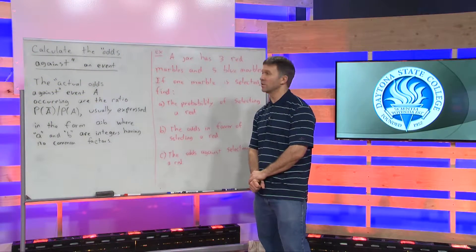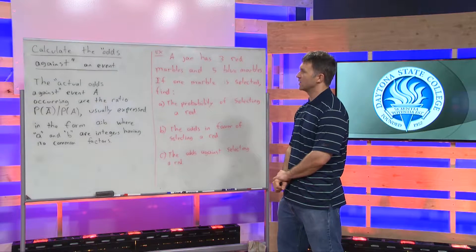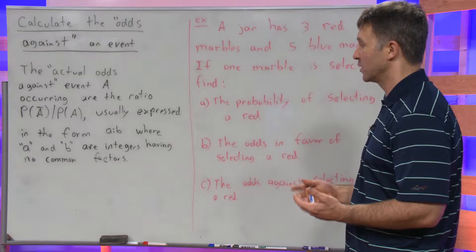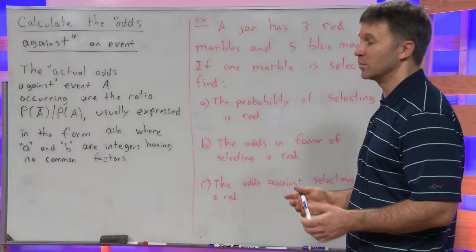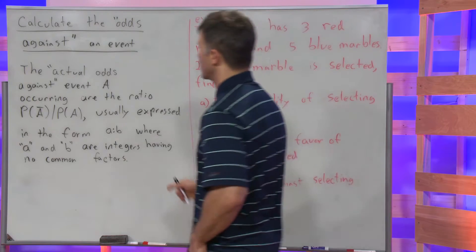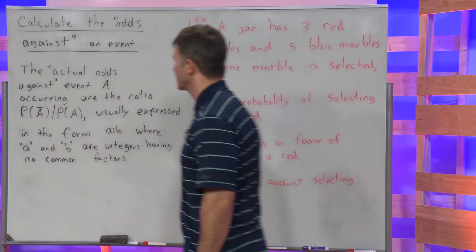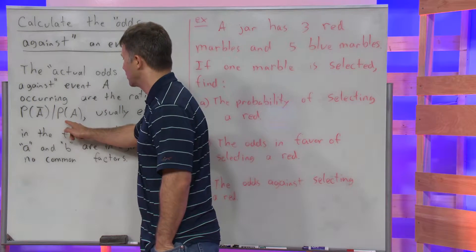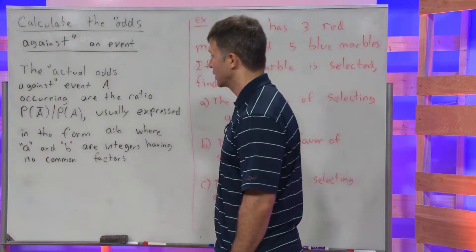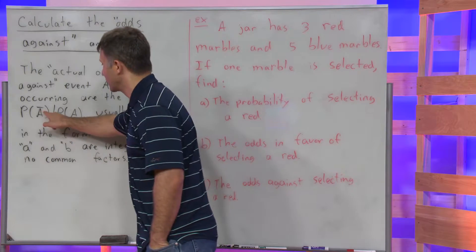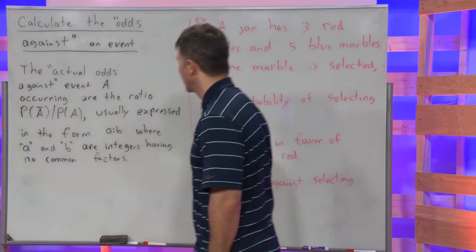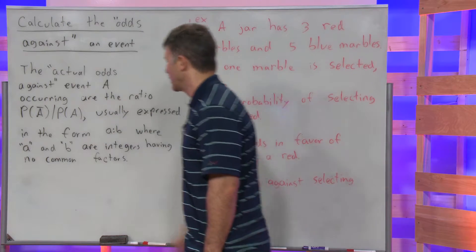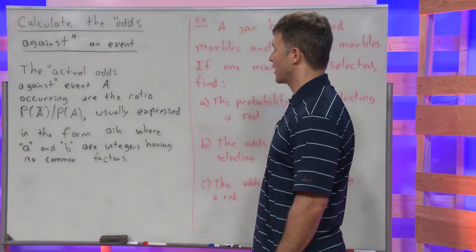In this example we're talking about calculating the odds against an event. The main idea is getting used to terminology you may see. The odds against event A occurring are the ratio P(A complement) over P(A). A with the bar over it is the notation for A complement. This is usually expressed in the form a to b, where a and b are integers having no common factors.